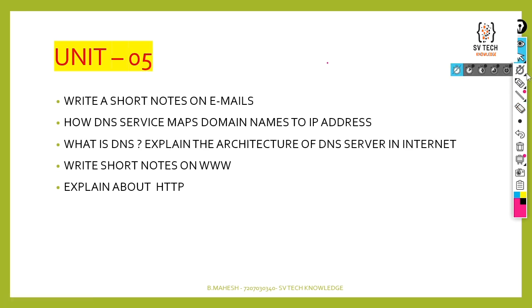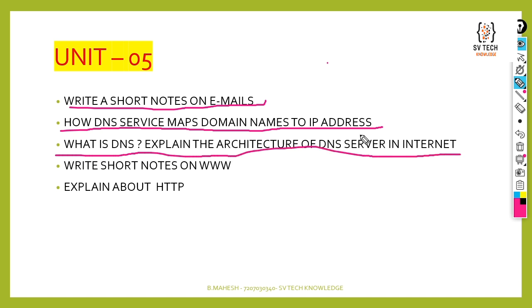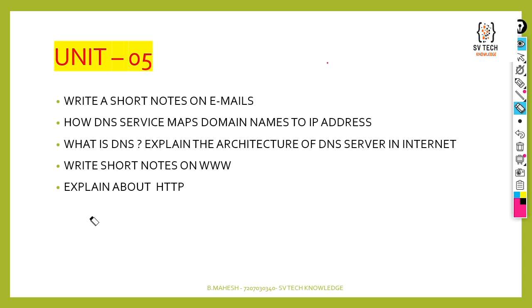The final unit is the fifth unit: write short notes on emails and how DNS service maps domain names to IP addresses. Next: what is DNS — explain the architecture of a DNS server and the internet. Next: write short notes on WWW — this is a very important question. The last two questions are very important: explain about HTTP. These are the important questions from the fifth unit and from the Computer Networks subject overall.